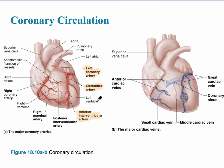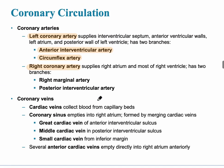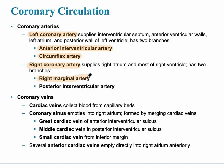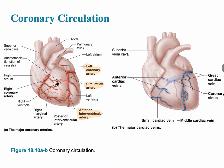The right coronary artery branches into the right marginal artery and the posterior interventricular artery in the back. It is a long artery that circles around the right side of the heart, supplying the SA and AV nodes as well as part of the interventricular septum. We can see the right coronary artery wrapping all the way around to the back of the heart, leading to the right marginal artery in front and the posterior interventricular artery in the back.